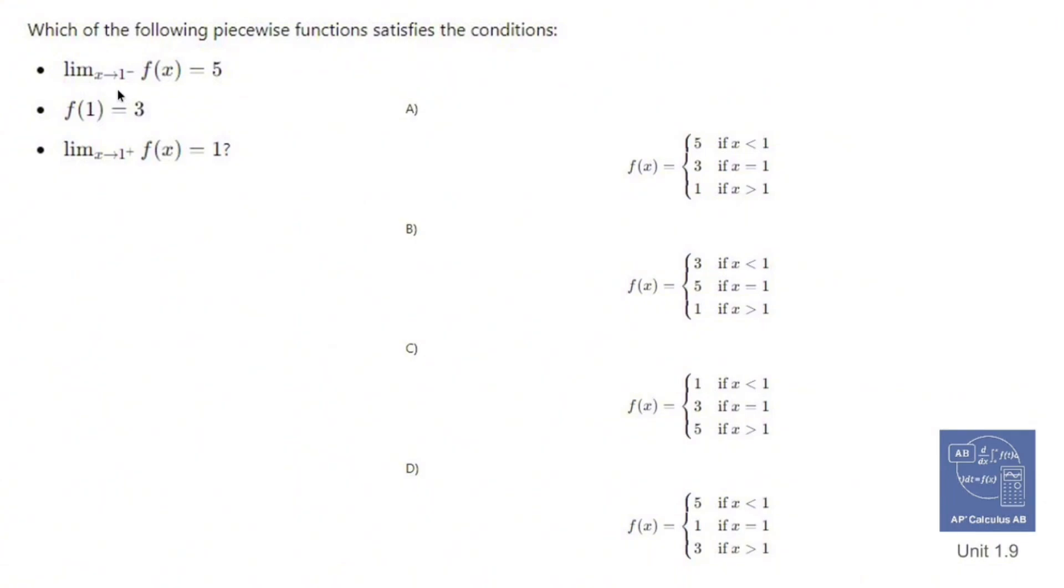Which of the following piecewise functions satisfy these conditions? The limit as x approaches 1 from the left has to be 5. When you plug in 1, you get 3. And the limit as x approaches 1 from the right is 1.